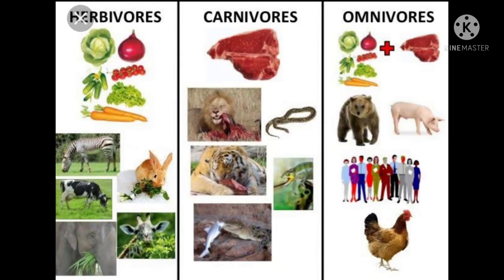Children, do all creatures need food? Yes, of course — living things need food. Do you give the same food for all creatures? No, never. Creatures eat different types of food. We can classify animals into three categories based on their food habits: the first one — herbivores; the second one — carnivores; and the third one — omnivores.